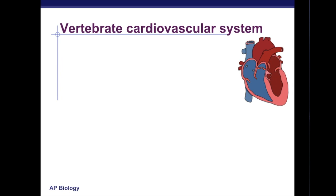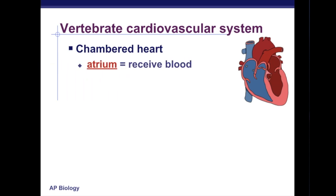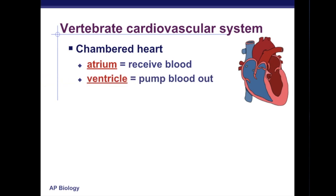The closed system of humans and other vertebrates is often called the cardiovascular system, describing the role of the chambered heart and the vessels in circulation. The atria of the heart are responsible for receiving blood, while the ventricles pump blood out away from the heart. The three types of blood vessels are the arteries, veins, and capillaries.